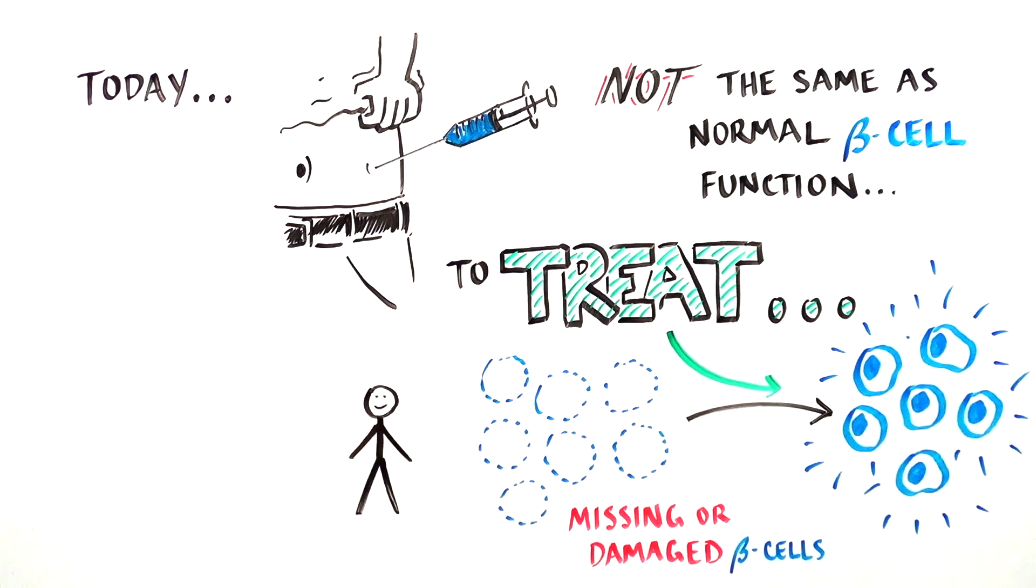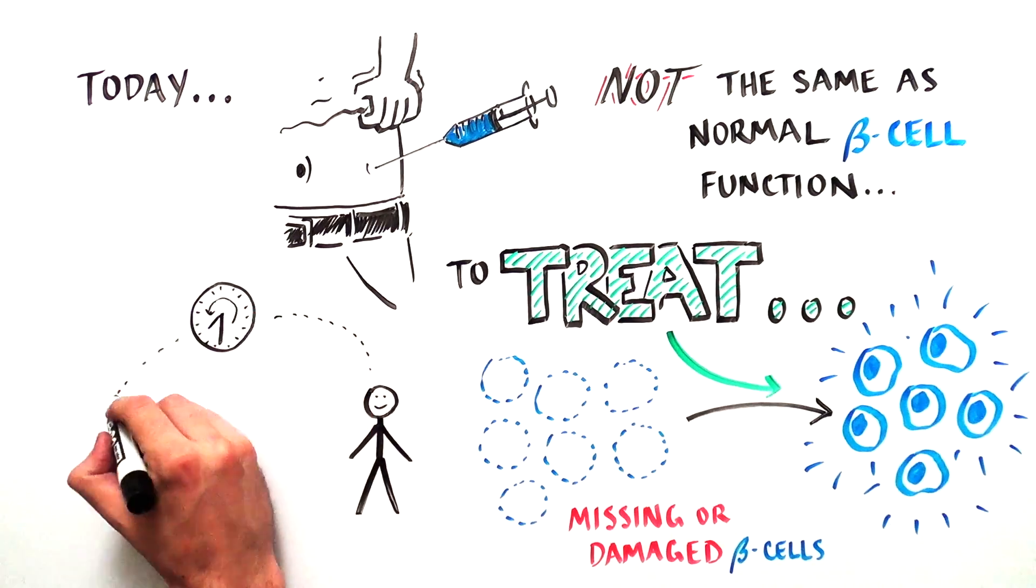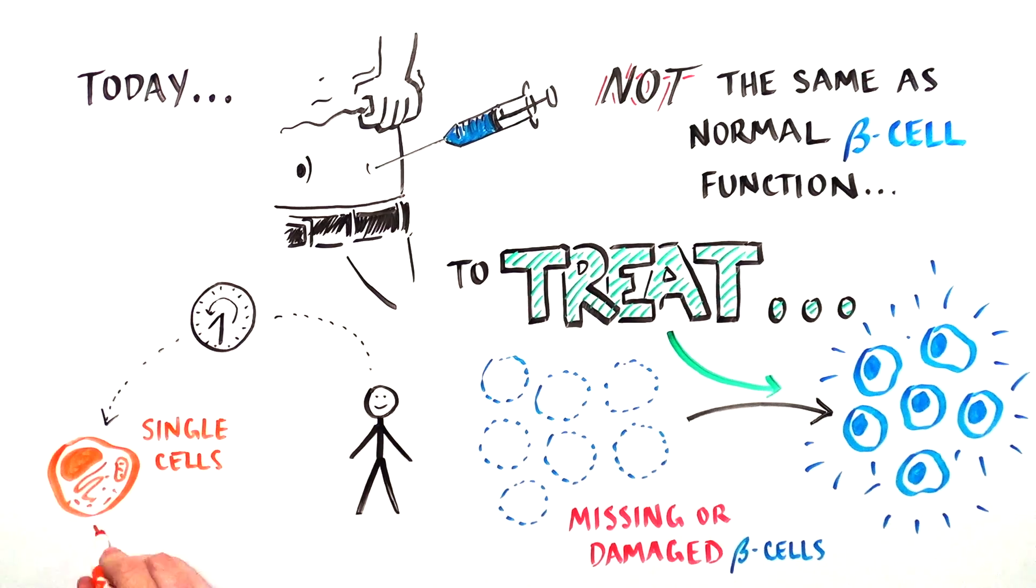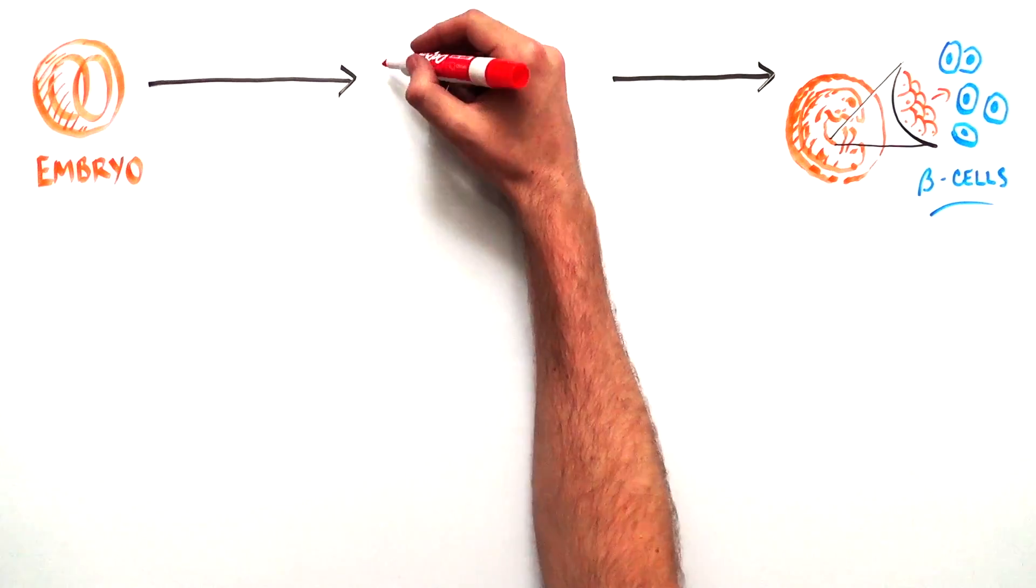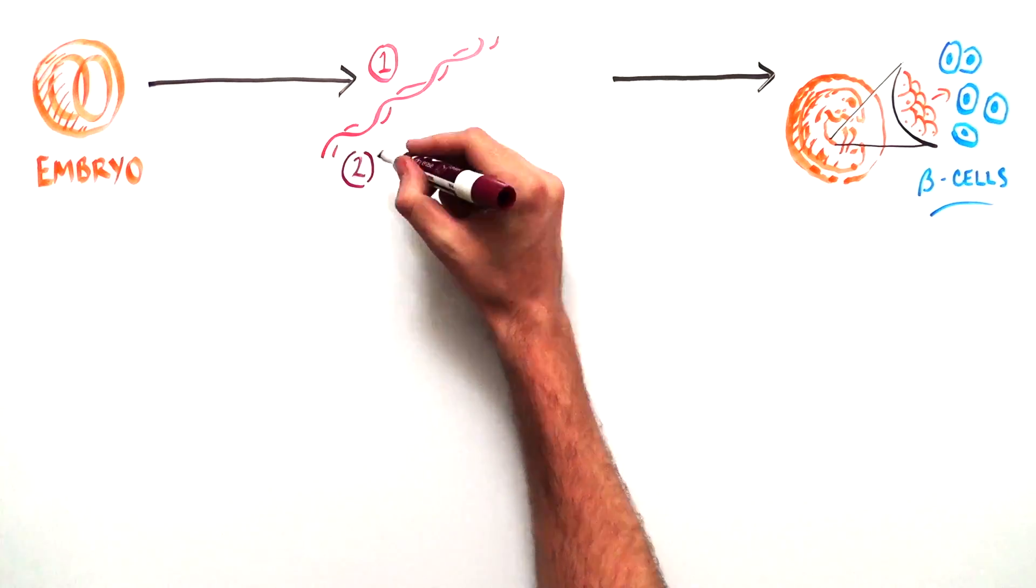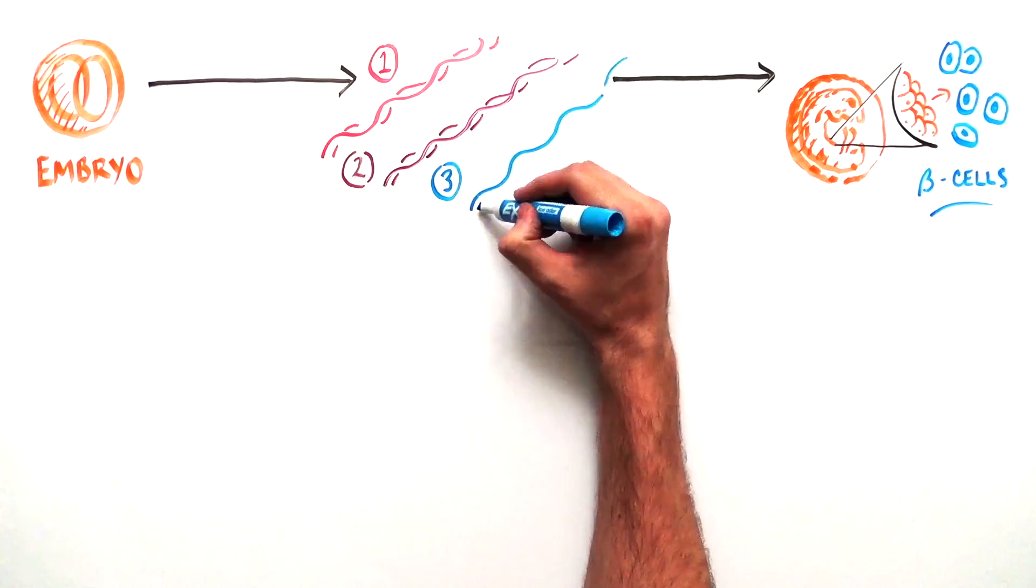To do this, they have turned back the clock to the time when we were all single cells to understand how beta cells are naturally produced. The development of beta cells in the embryo involves the coordinated activation of a very specific set of genes in a very specific sequence.